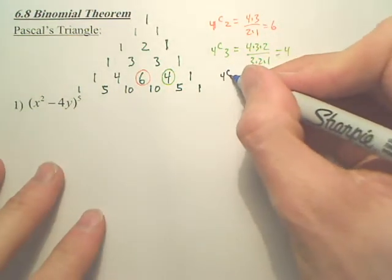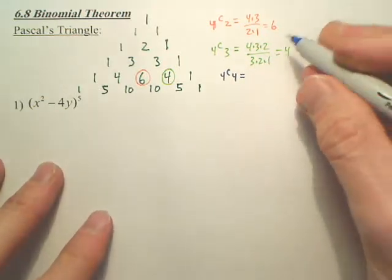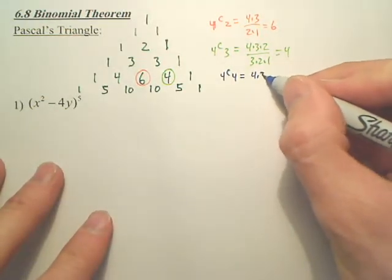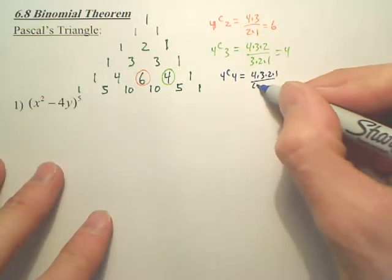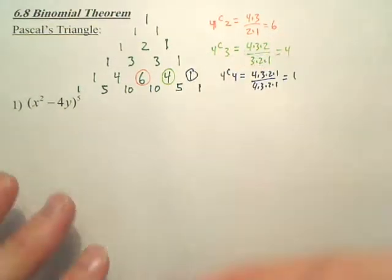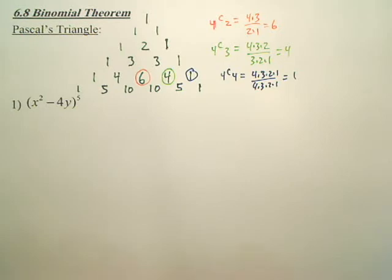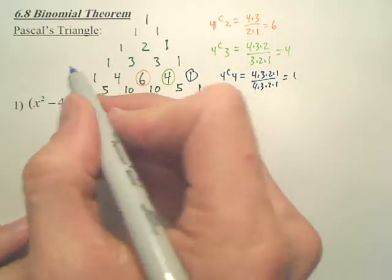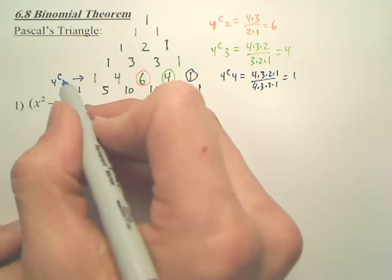What's 4C4? Isn't that 4 times 3 times 2 times 1 over 4 times 3 times 2 times 1, which is 1? Do you understand this column is your 4CR?